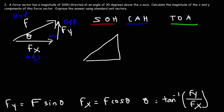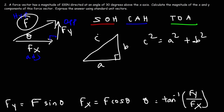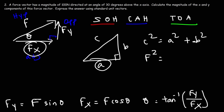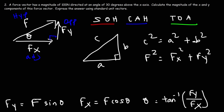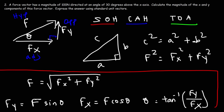Now let's go back to a right triangle with sides A, B, and C. According to the Pythagorean theorem, C² = A² + B². C is the hypotenuse, so we replace C with F, A with Fx, and B with Fy. So to calculate the magnitude of a vector from its x and y components, it's simply F = √(Fx² + Fy²). Make sure you're familiar with these four formulas.